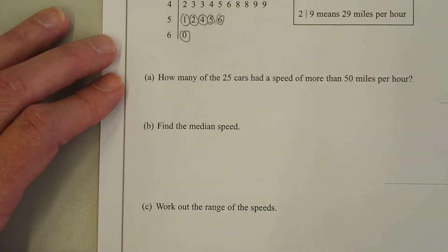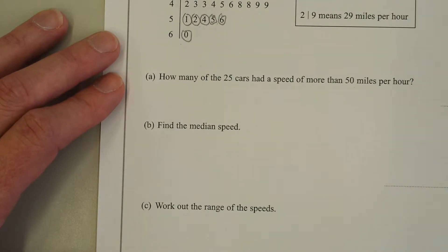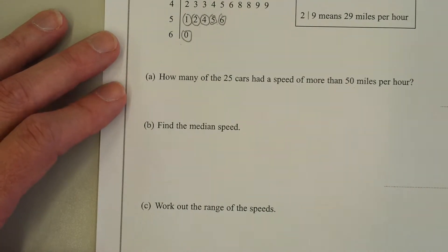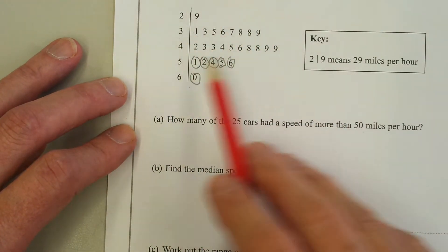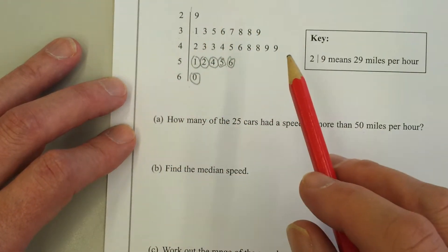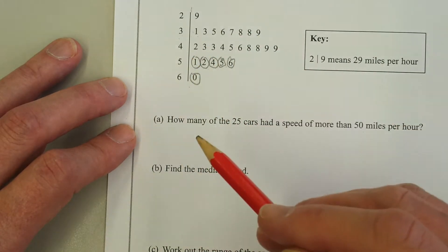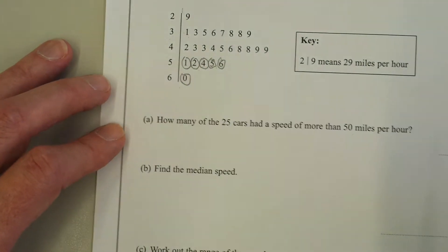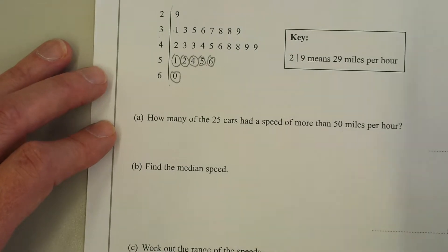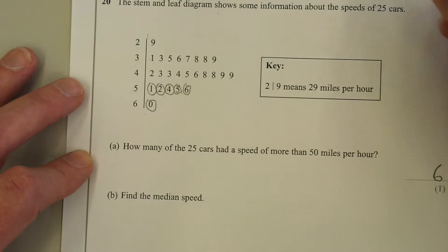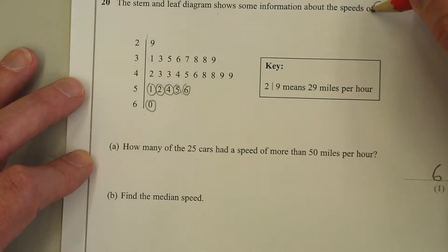The next question asks to find the median. The median is the middle number when the numbers are in order. In this stem and leaf diagram, it's already an ordered diagram, so you don't need to order them. There are a few different ways of finding the median, but I'm just going to choose one method. The question says there's 25 cars.